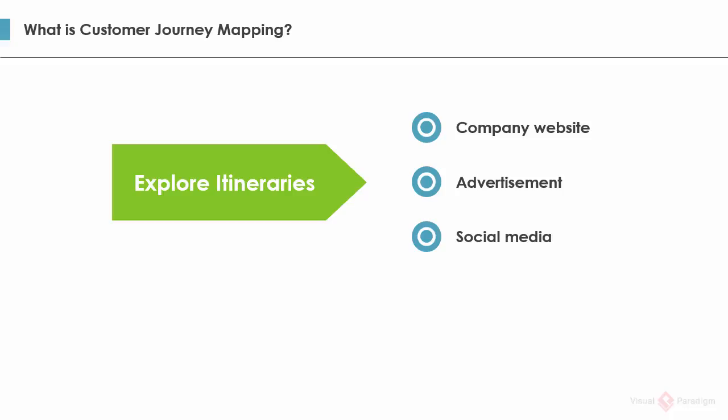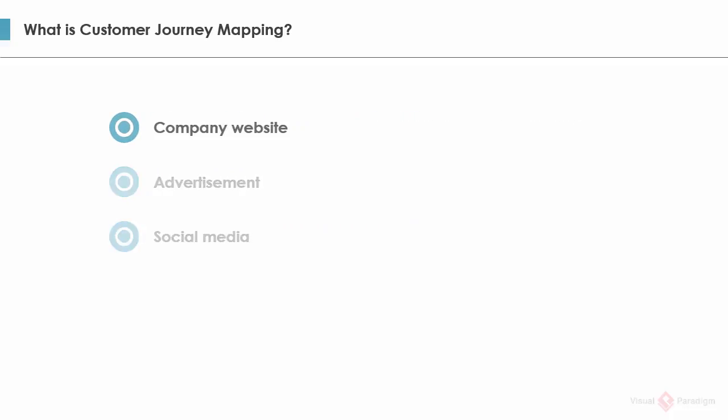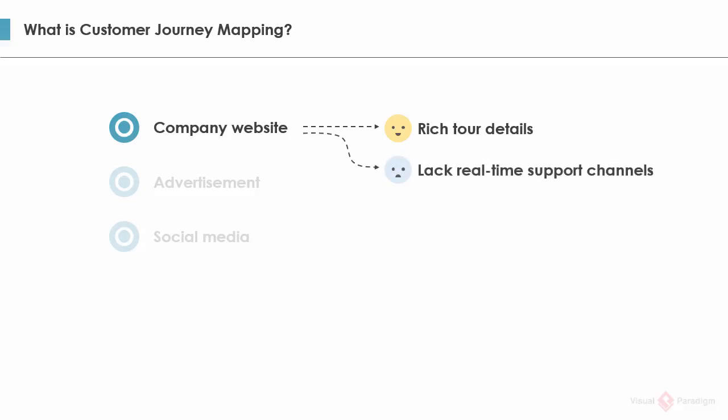Once the touch points are identified, I'll start to identify what the customers think and how they feel for each touch point. What do the potential customers think when they visit our website to find tour information? Are they happy, unhappy, or even frustrated with our services? Think as a potential customer and list out all the customer thinking and feeling. For example: they are pleased with the rich tour details we provide; they are unhappy due to the lack of real-time support; they are unhappy because the brochures are not printer-friendly.